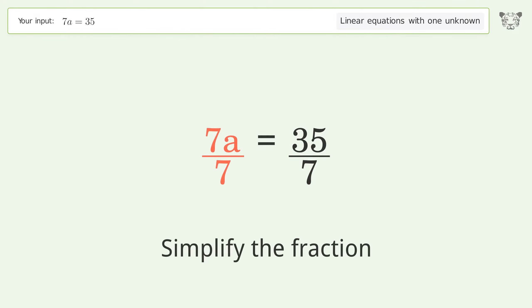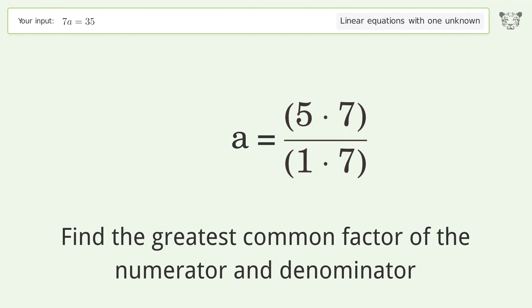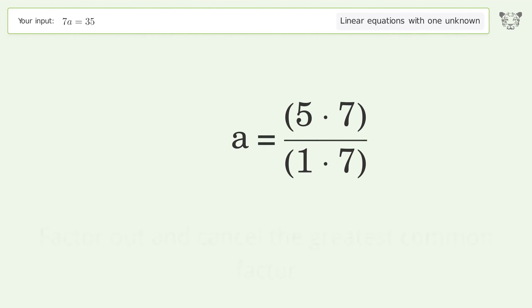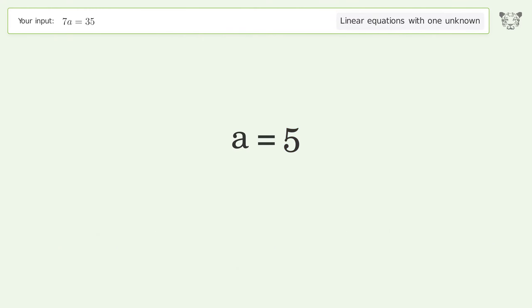Simplify the fraction by finding the greatest common factor of the numerator and denominator. Factor out and cancel the greatest common factor, and so the final result is a equals 5.